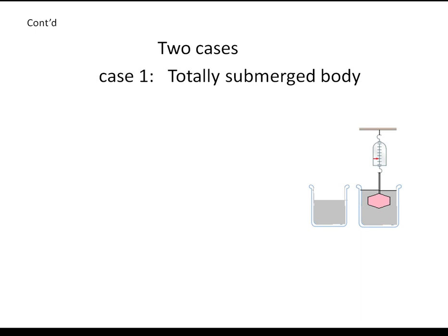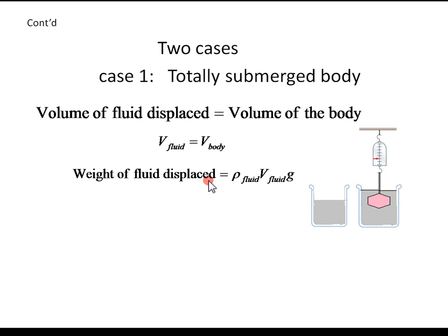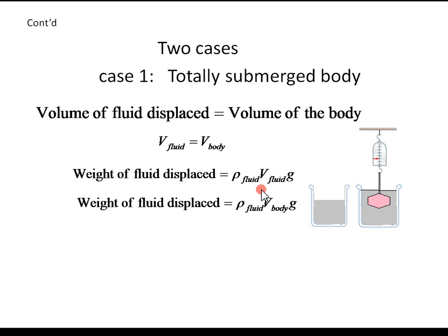There are two important cases. When the object is totally submerged in the fluid, the volume of the fluid displaced is equal to the volume of the body — the volume of the fluid and volume of the body are the same. So weight of fluid displaced, which is buoyant force, equals density of the fluid times volume of the fluid times g. If the object is completely submerged below the surface of the liquid, the volume of the fluid displaced will equal the volume of the body.